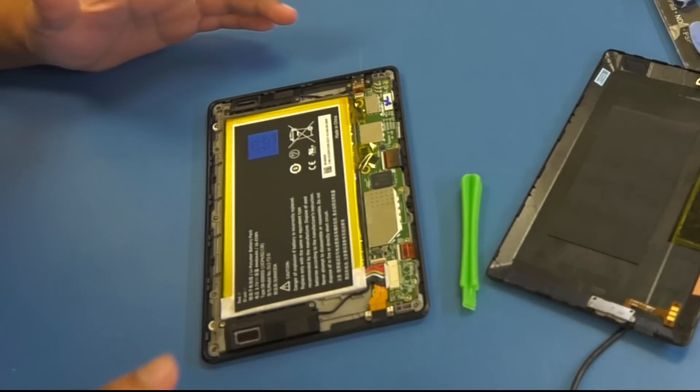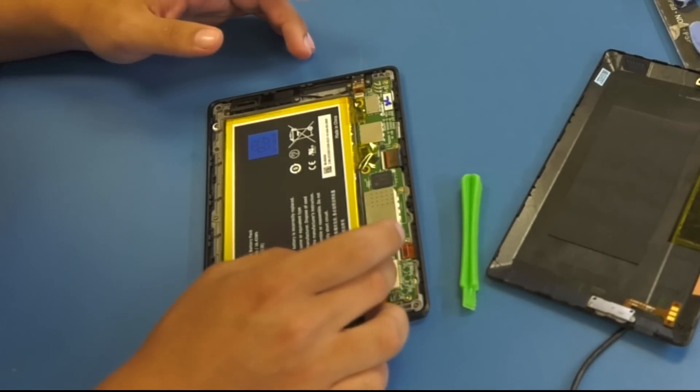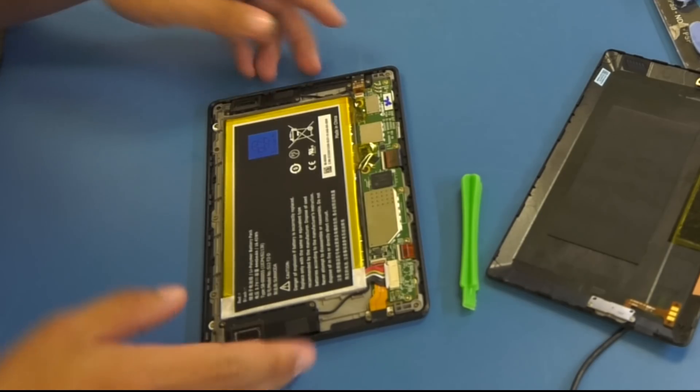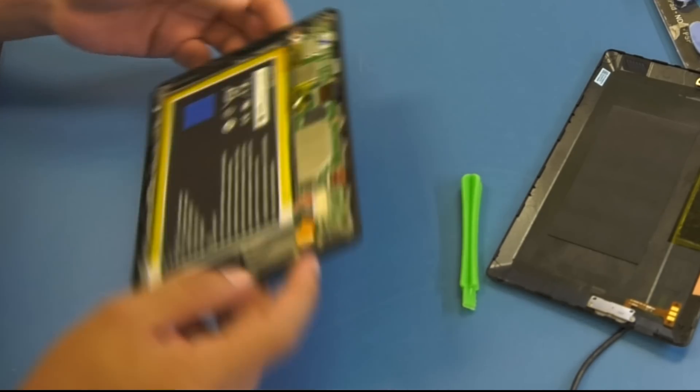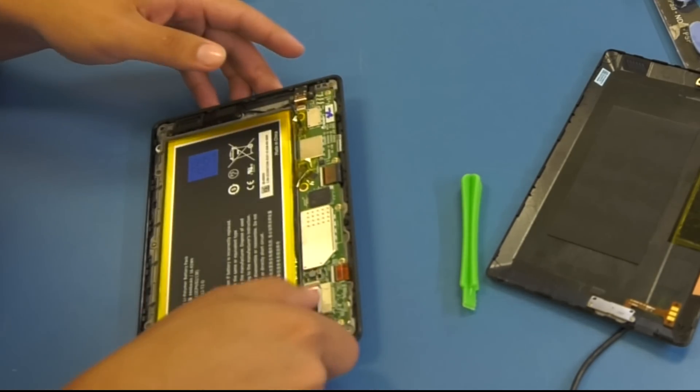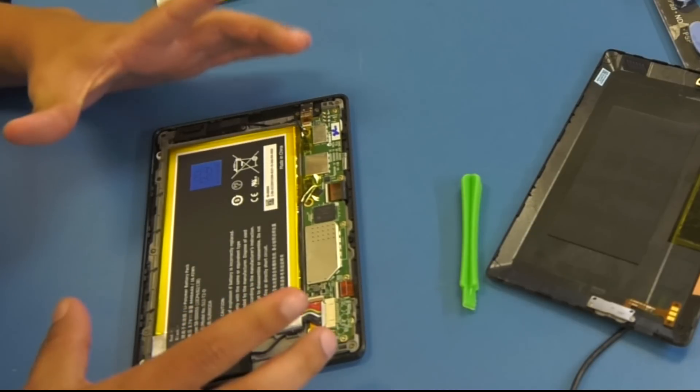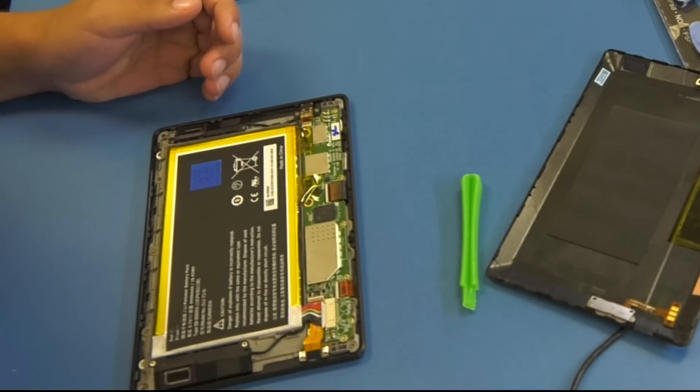And we're going to first disconnect the battery, and the power button right here. We're going to disconnect it from the motherboard and connect it again. Let's see if that works.